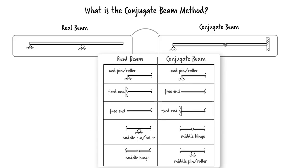By using this table. For example, as you can see here, a free end in the real beam converts into a fixed end in the conjugate beam. A fixed end converts into a free end. An interior pin or roller converts into an internal hinge, and so on.